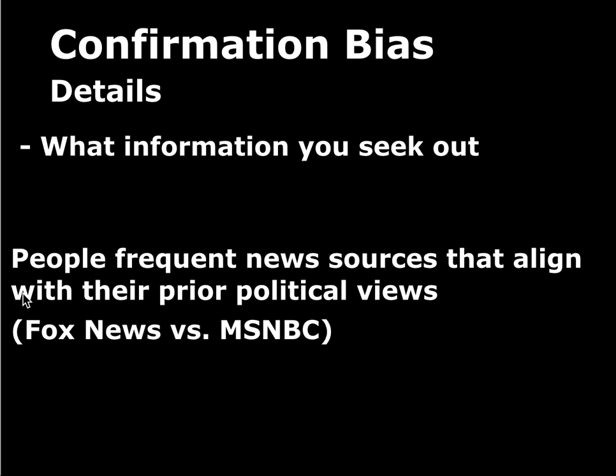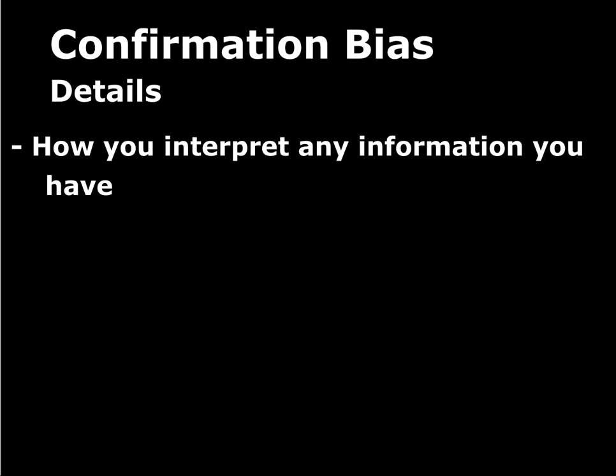This also happens in experimental settings. In a card-flipping task described in lecture, people were asked which cards they'd need to flip over to assess whether a rule was true. People would only flip the cards that could confirm the rule — they wouldn't flip the cards that could disconfirm it. The next way confirmation bias can manifest is in how people interpret information they already have.